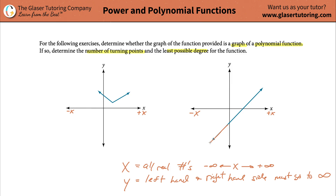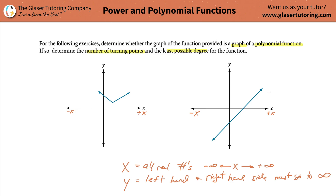The second graph also works. As you look at the left-hand side of this function, it goes on and on forever, all the way down to negative infinity in the y direction. Similarly, as you look at the right-hand side, it goes all the way on forever but goes to positive infinity in the y direction. That's fine — one's positive and one's negative, but they both move to infinity, which is all that matters. So both graphs now meet that criteria.